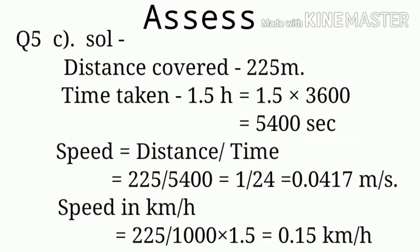Now we find out the value in kilometer per hour. So 225 we divide by 1000 so that meters convert to kilometers, and then divide by 1.5, that is the time in hours, and we get 0.15 kilometer per hour. This is the speed we get in kilometer per hour. In this way you can solve the numericals.